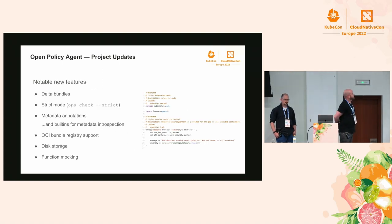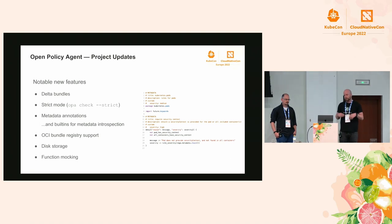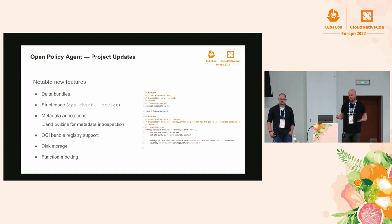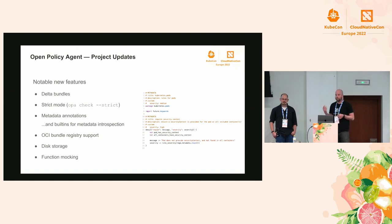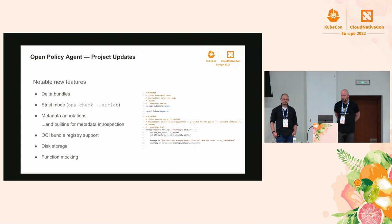Some notable features recently released. First is Delta Bundles, which allows OPA to fetch only the deltas - if you have a large set of data and make an update, OPA fetches only what was actually changed rather than the whole bundle. There's also a new strict mode, which lets you catch common errors like unused variables and unused imports. It's not all the way to a linter yet, but it's a good step.